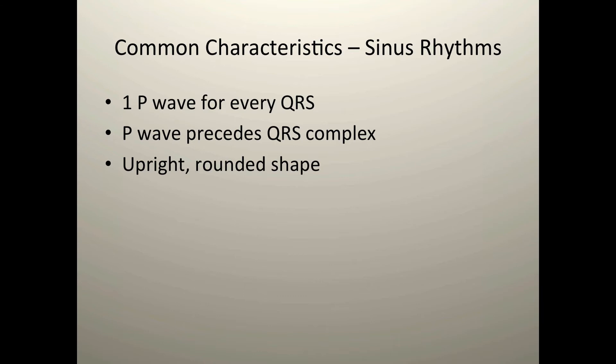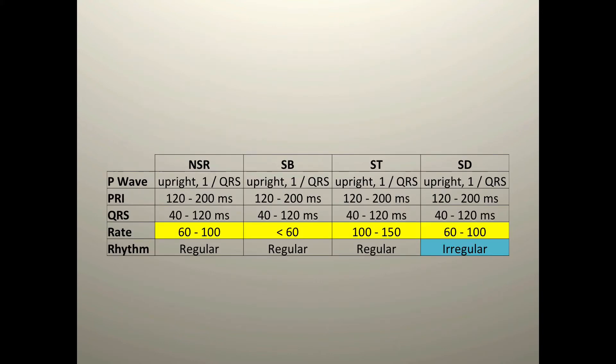The common characteristics we described before: there must be one P wave for every QRS complex, it must be upright, and generally it's rounded in shape, and that P wave must precede the QRS complex in order to call the underlying rhythm a sinus rhythm. Let's take a look at all of the different sinus rhythms available when we're looking at the EKG, using the five-step method of evaluation.